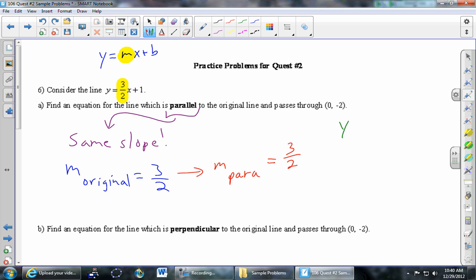So we'll go ahead and use our mx plus b version to find the equation of the line that we're interested in, this parallel line. y equals the slope of this parallel line we just found as 3 halves x plus b.